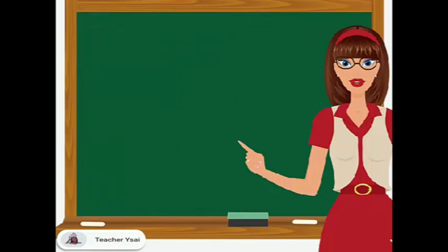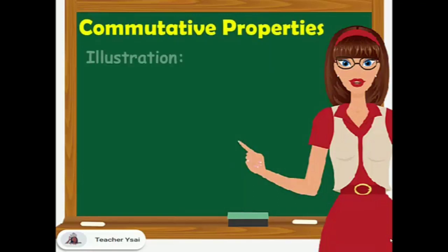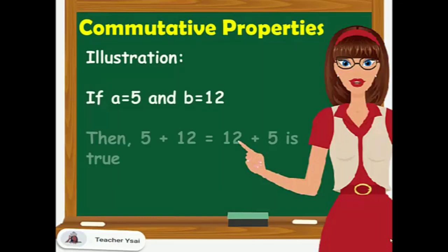Next, we have the commutative property. The commutative property of addition states that adding two or more numbers will give the same sum regardless of the order of the numbers. That is, the sum of a plus b is equal to the sum of b plus a. For illustration, if a equals 5 and b equals 12, then the sum of 5 and 12 is equal to the sum of 12 and 5.